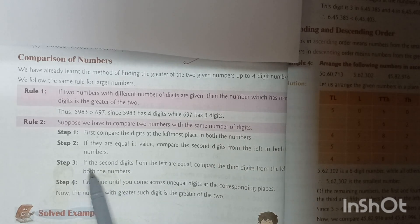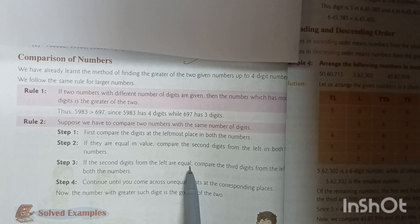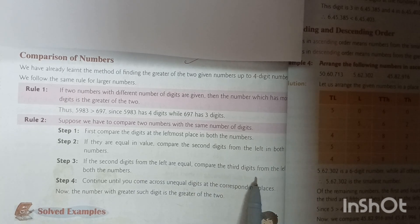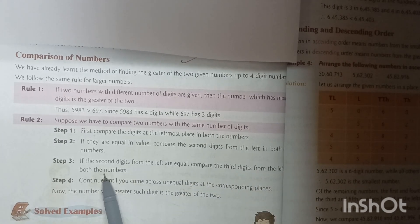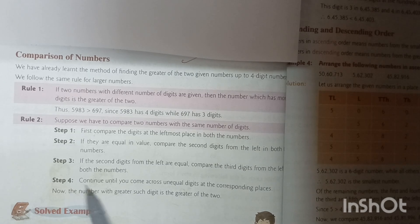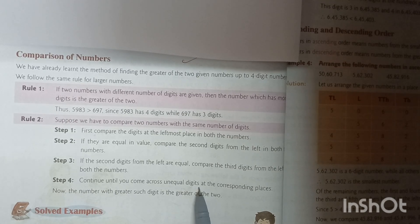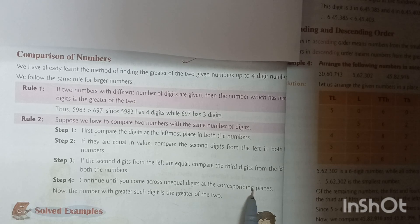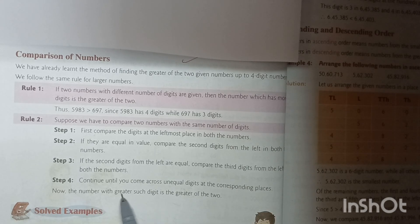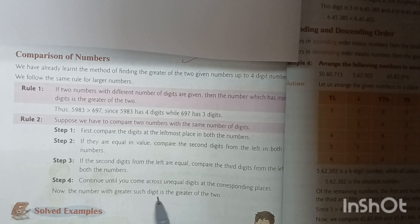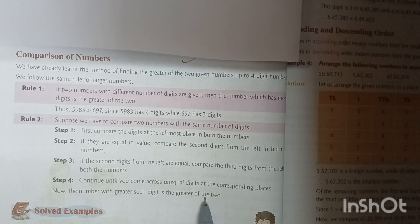Step 3: If the second digits from the left are equal, compare the third digits from the left in both the numbers. Step 4: Continue until you come across unequal digits at the corresponding places. Now, the number with the greater such digit is the greater of the two.